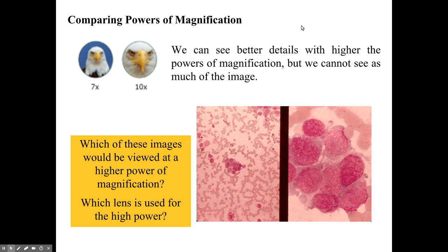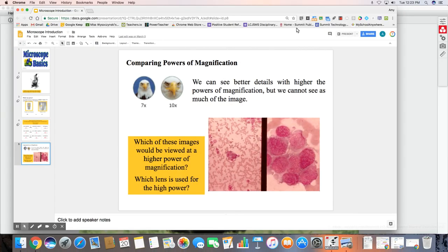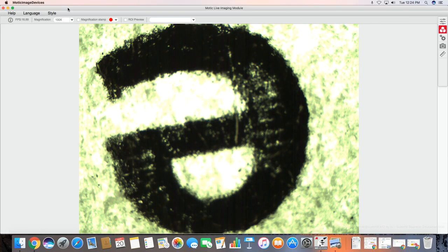Now I'm going to show you what our microscope can do using the letter E lab that we did in class. I'm going to switch views here and we're going to take a look at the microscope. So if I put a letter E under the microscope this is what I would see.